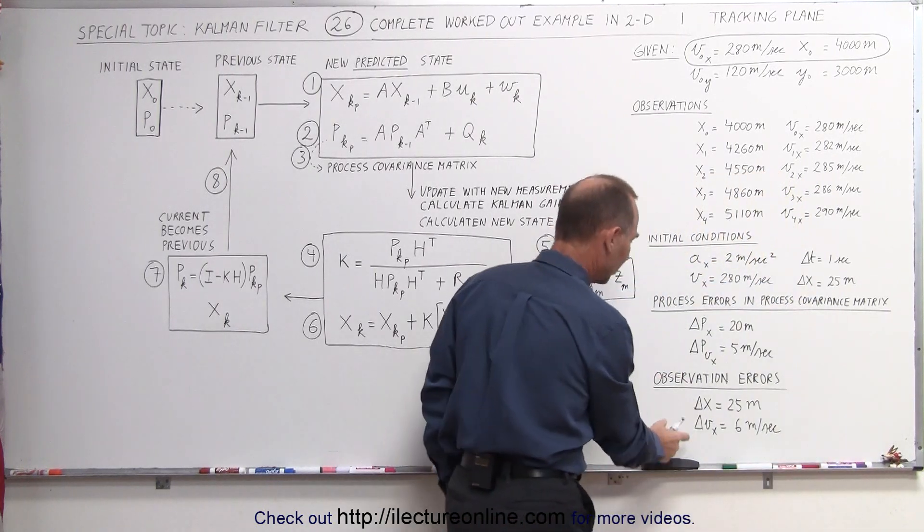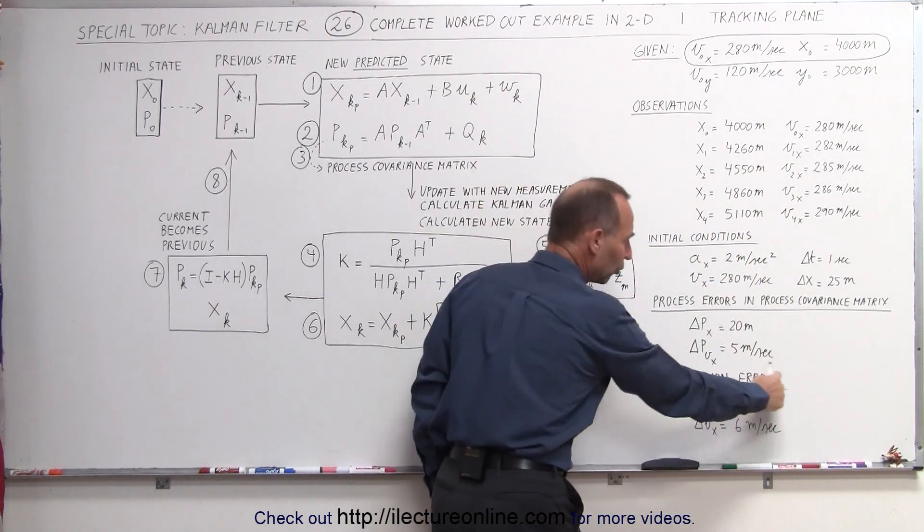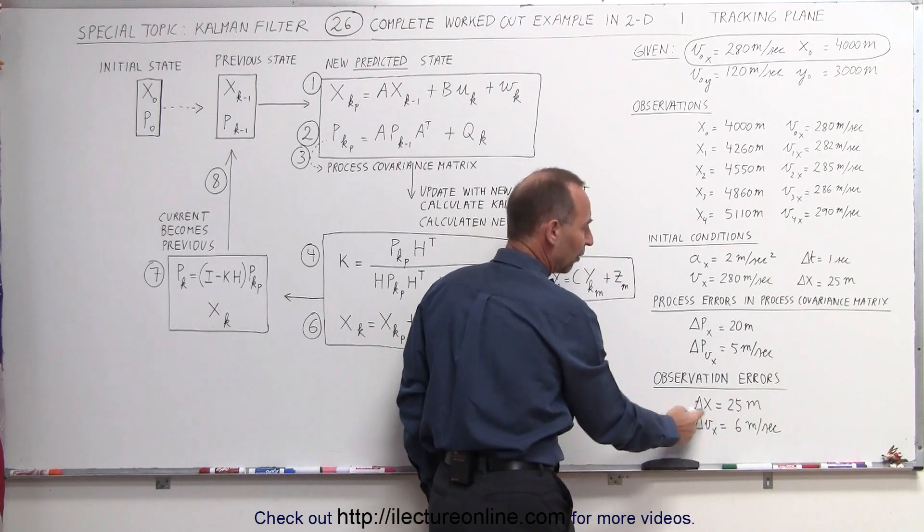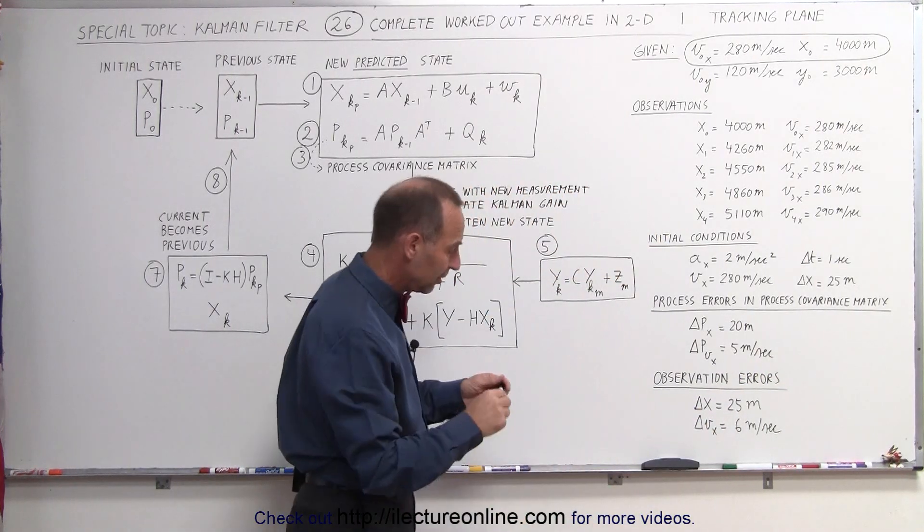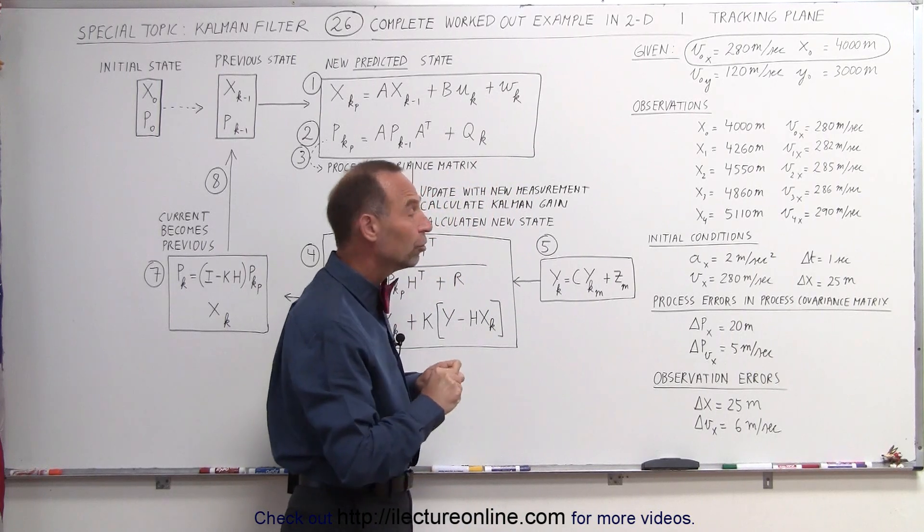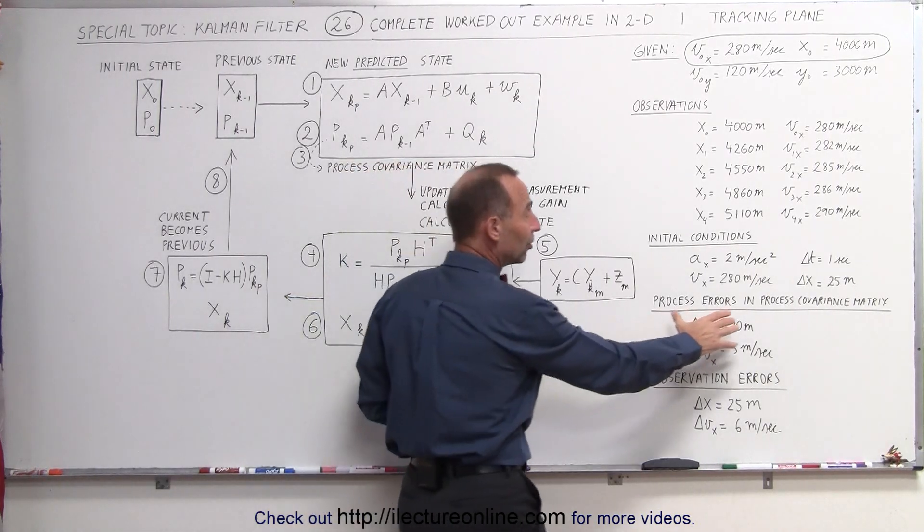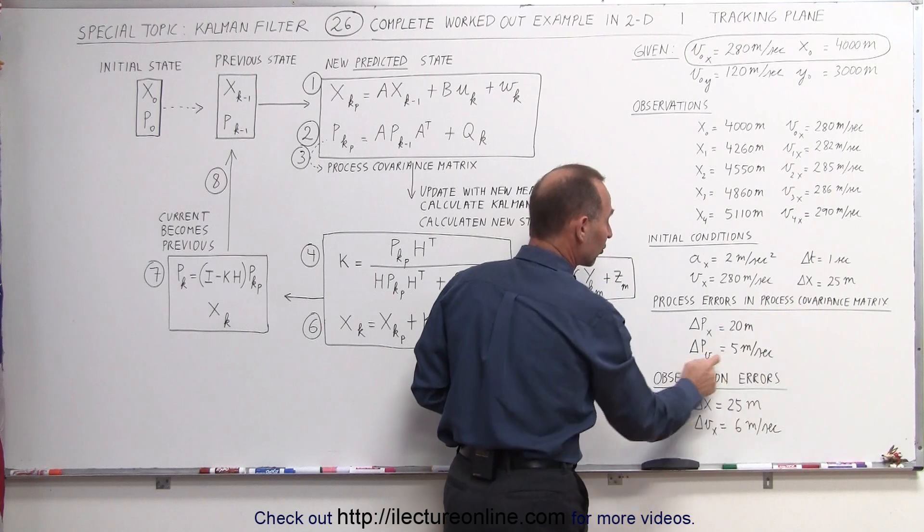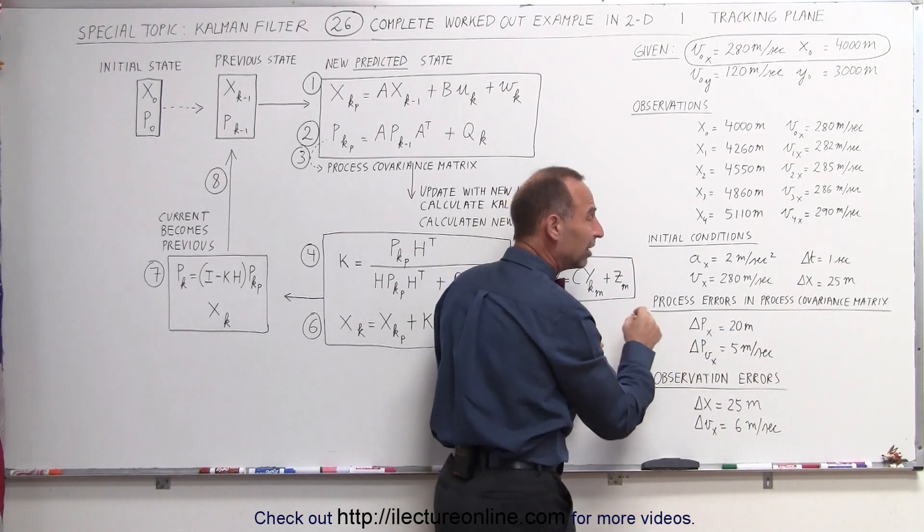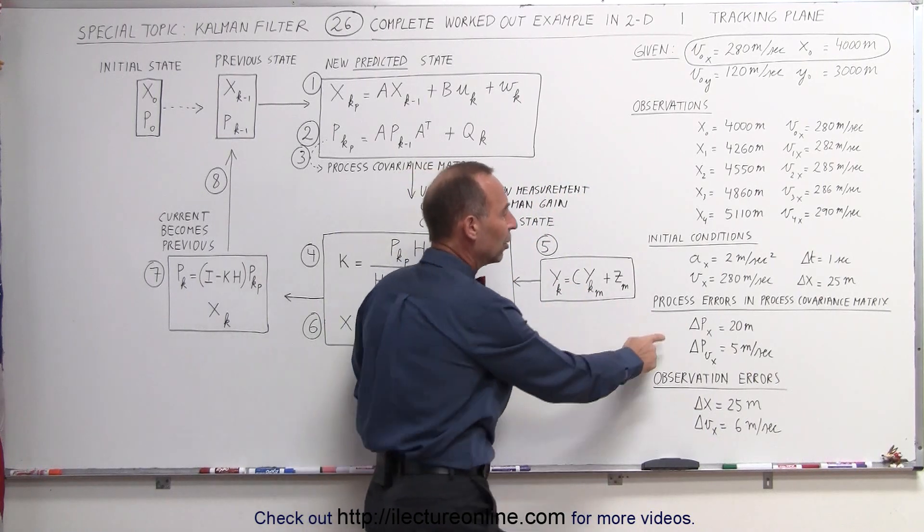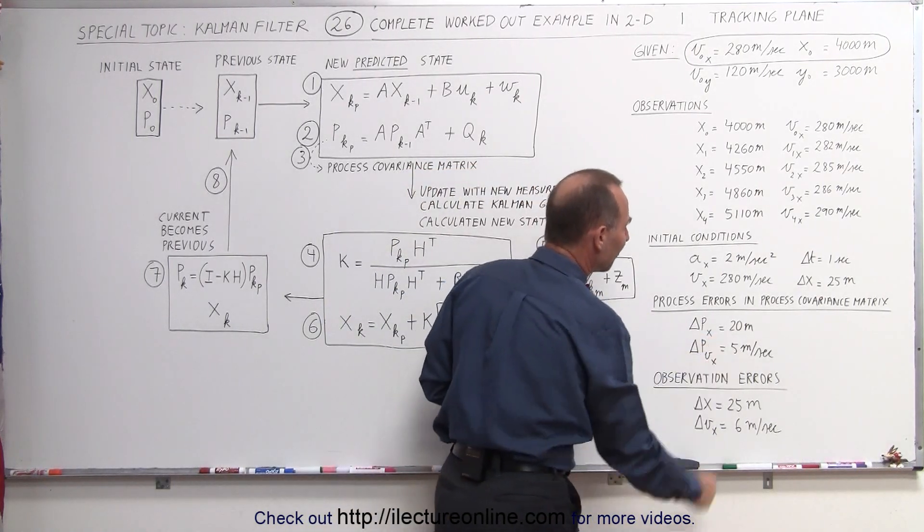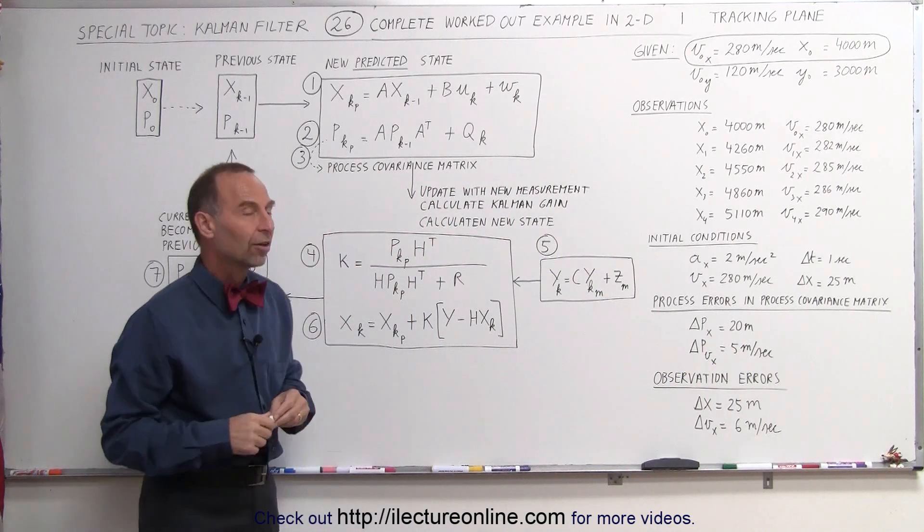And also I should put an uncertainty in the velocity. Here are the observation errors. I think I already have it here as well. We're going to assume initial observation errors of 25 meters on the position and 6 meters per second on the velocity. Also notice that on the process errors in the process covariance matrix, the error in the position, and this is simply by the calculation that we do internally into the system, 20 meters for the position and 5 meters per second for the velocity.